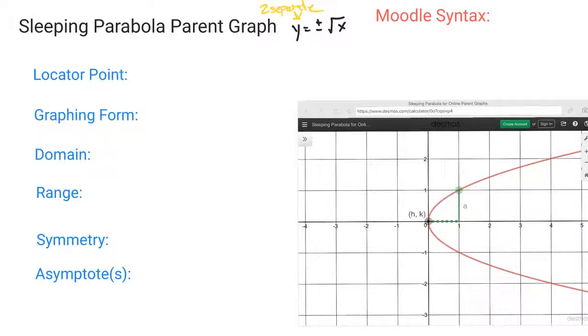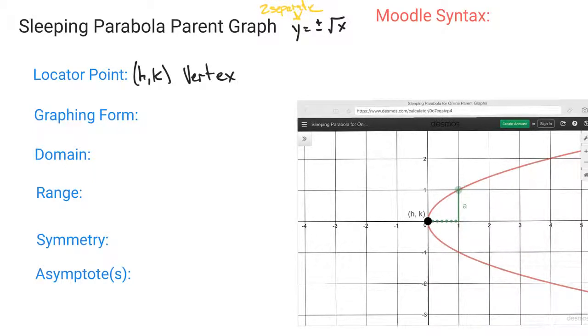The locator point is still going to be (h,k), so you have your h and you have your k, and that is going to be called the vertex again. And as we move that around, I can move it left and you can see that everything moves along with it, and you can move it right and you can see everything moves along with that as well.